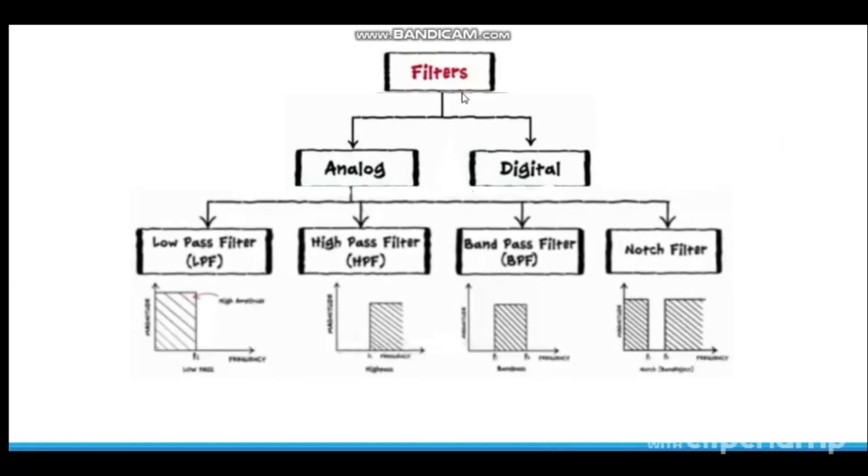Filters are broadly classified into two categories: analog and digital. Analog filters are used to process analog signals and digital filters are used to process analog signals by using digital techniques. Analog filters are further classified into low pass filter, high pass filter, band pass filter and notch filter. This notch filter is also known as band reject filter. Here in this video we will be seeing designing of low pass filter and high pass filter.